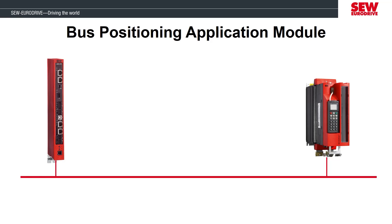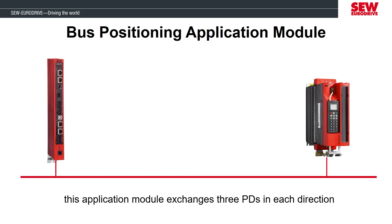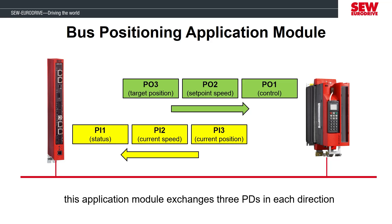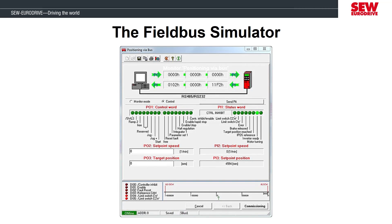Now that we've shown examples of process data words, let's get specific about the application module we'll be demonstrating: the bus positioning application module, configured to exchange three process data words in and out between the upper level device and the Movi Drive. Process output 1 is the control word, process output 2 is the set point speed, and process output 3 is the target position. The Movi Drive sends status information back upstream: process input 1 is the status word, process input 2 is the current speed, and process input 3 is the current position.